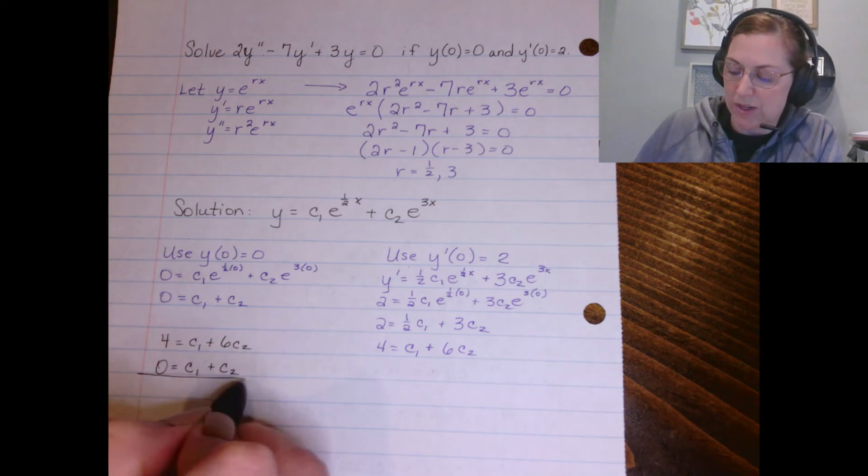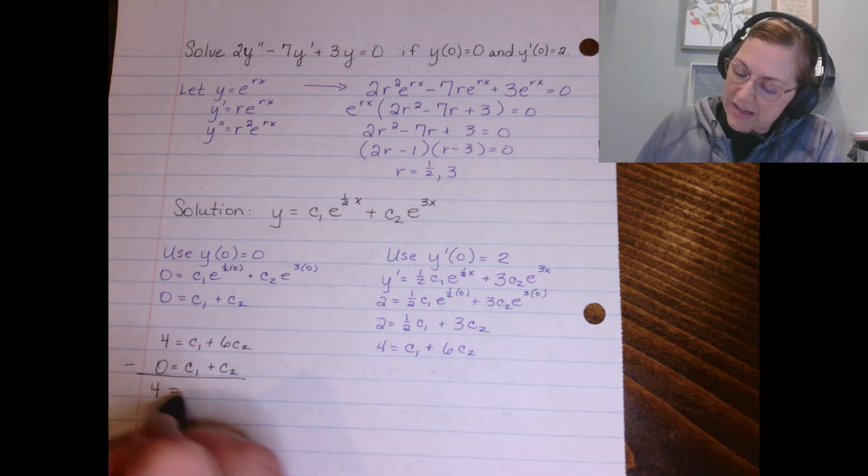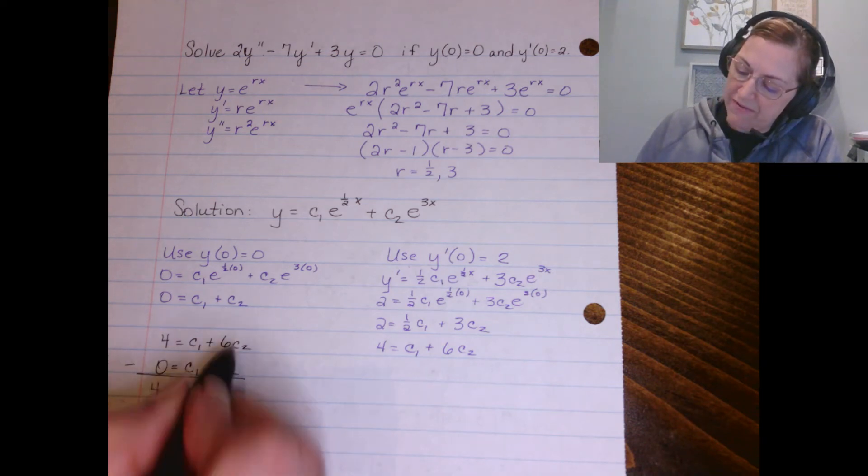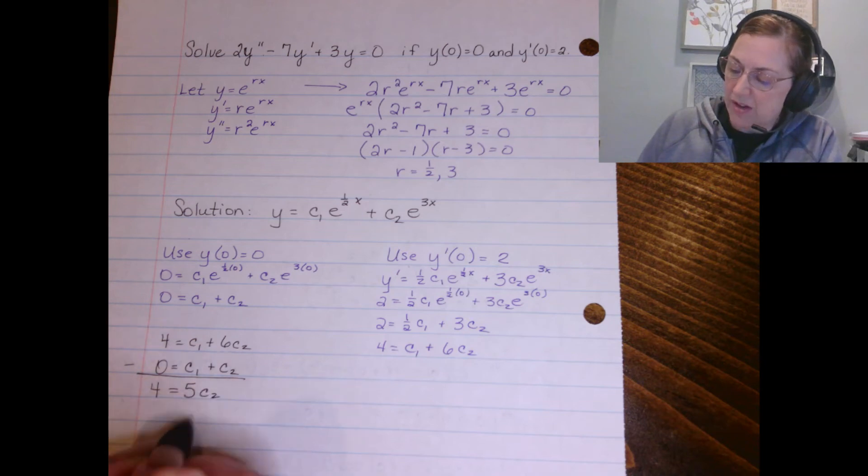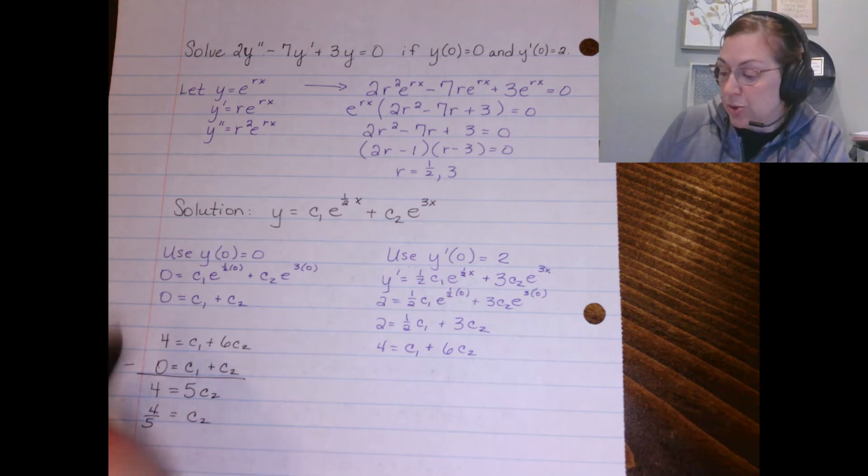And then I'm going to just subtract the two equations from each other. I'm left with 4 = 5c₂, so I know then that c₂ equals 4/5. Using a little substitution here.